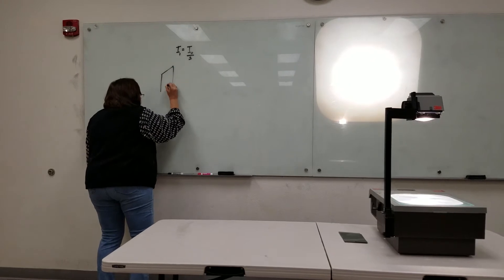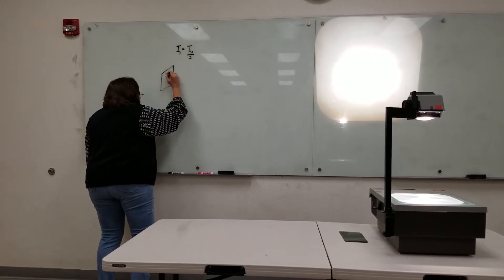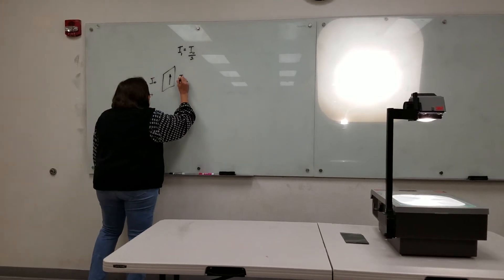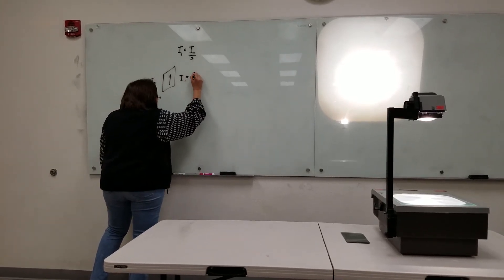So let's take our light, put it through that vertically polarized filter, we get I naught out here, but coming out here we get I1 which is I naught over 2.